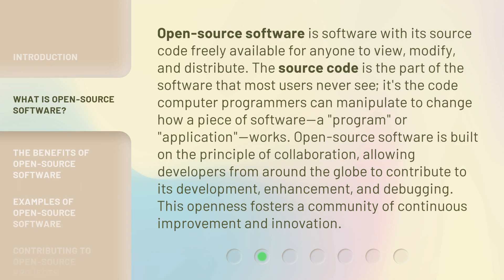Open source software is software with its source code freely available for anyone to view, modify, and distribute. The source code is the part of the software that most users never see — it's the code computer programmers can manipulate to change how a piece of software, a program, or application works. Open source software is built on the principle of collaboration, allowing developers from around the globe to contribute to its development, enhancement, and debugging. This openness fosters a community of continuous improvement and innovation.